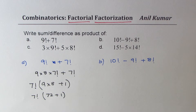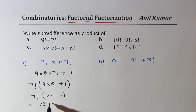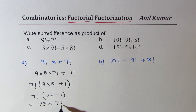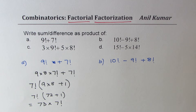So what we get is 7 factorial times 72 plus 1, which is 73. We could write this as 73 times 7 factorial. That becomes the product form. The product involves a factorial term as well. This is the strategy which should be applied to factorize terms involving factorials.